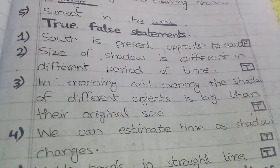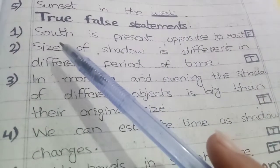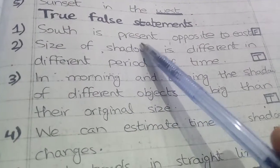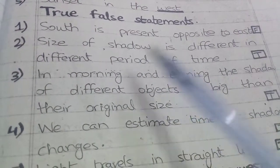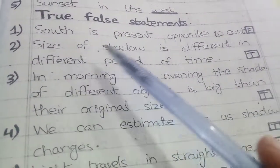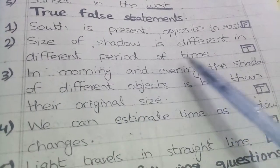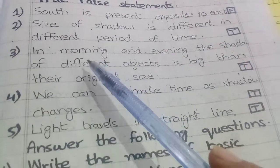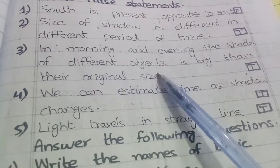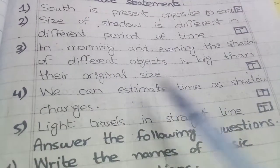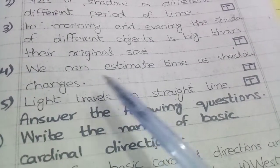Two false statements: South is present opposite to east — false. Size of shadow is different in different periods of time — true. In morning and evening, the shadow of different objects is bigger than their original size — true.